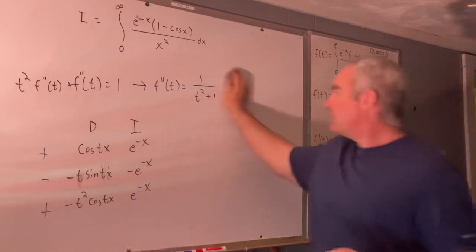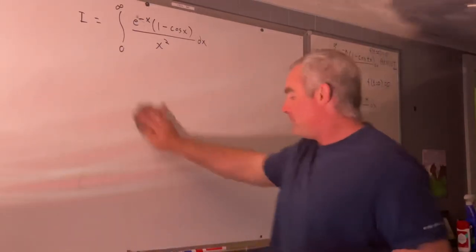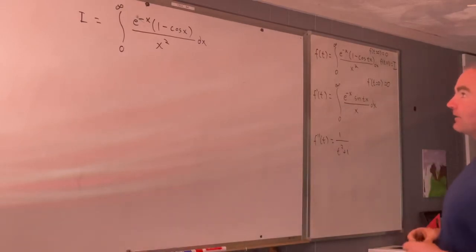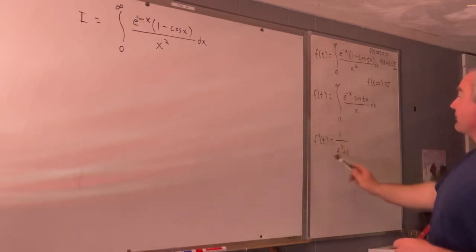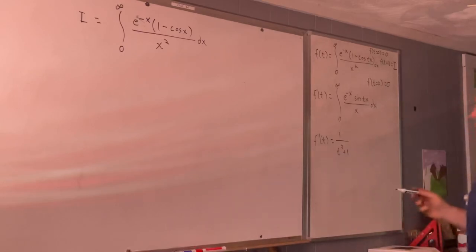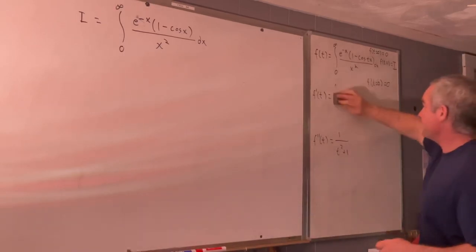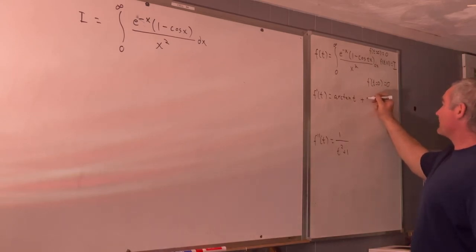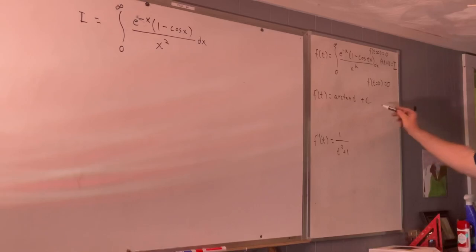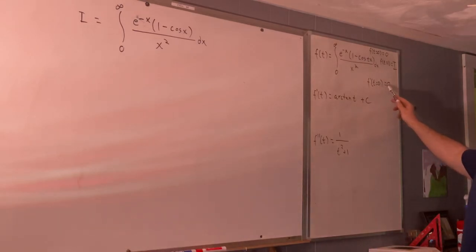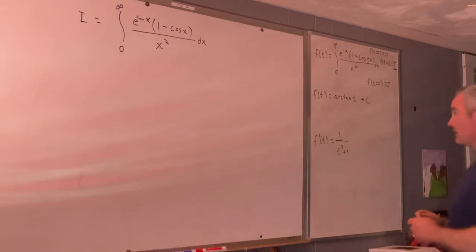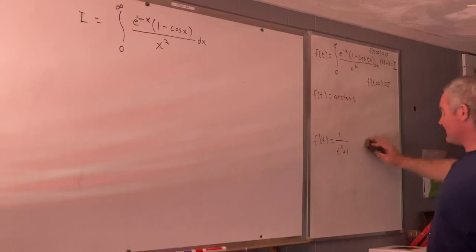We're not really interested in f''(t) — we actually want f(t) so we can plug in t equals 1 to get the value for i. We've got to go backwards, so now we'll integrate f''(t). We know that's going to be arctan(t) plus a constant of integration. We can solve for that constant using the fact that f'(0) equals 0: that means 0 equals arctan(0) plus c, so c equals 0. Therefore f'(t) is simply arctan(t).